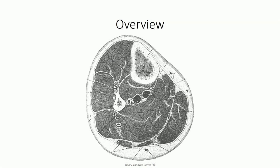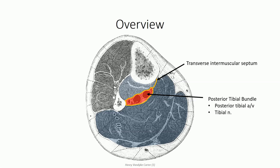The posterior compartment of the leg is the region that lies posterior to the tibia, fibula, and interosseous membrane, and is responsible for plantar flexion and inversion of the ankle. The region is subdivided into superficial and deep compartments by the transverse intermuscular septum. We see two separate neurovascular bundles: the posterior tibial bundle containing the main branch of the tibial nerve and the posterior tibial artery and vein, and the fibular bundle containing the fibular artery and vein. Muscles include gastrocnemius, soleus, and plantaris superficially, and tibialis posterior, flexor digitorum longus, and flexor hallucis longus deeply.